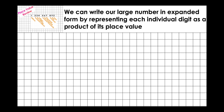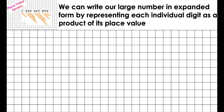Keeping place value in mind, we can write our large number in expanded form by representing each individual digit as a product of its place value. We'll start with the 1 in the billions place value: 1 multiplied by 1 billion. Notice how I'm using graph paper, writing each square representing one space in this place value so that I can easily line up my work. So I've got 1 times 1 billion.